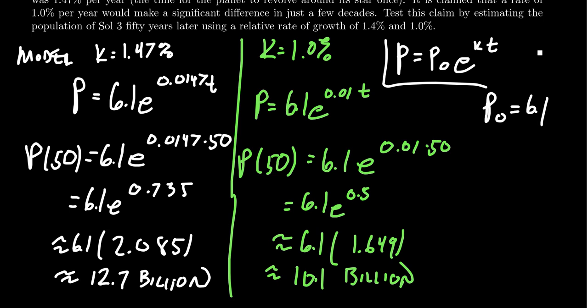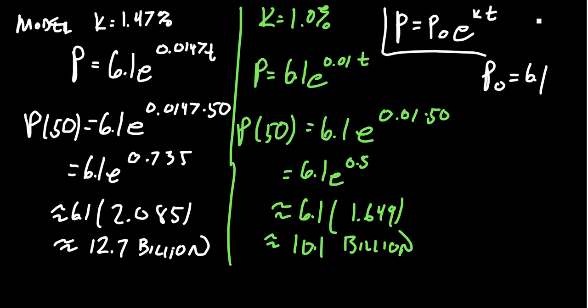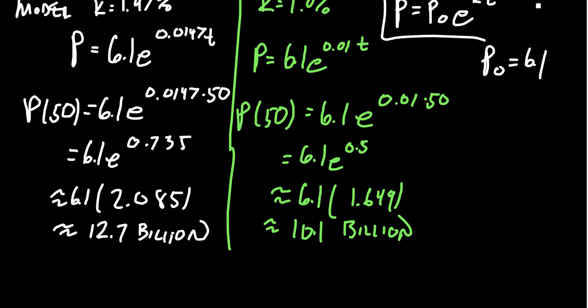With the current growth rate 50 years from now, you have 12.7 billion people on Sol 3. For the smaller growth rate of 1%, you'd have 10.1 billion. And so that is a difference of about 2, almost 3 billion right there. And so as such, it is fair to say that the growth rate, the decrease of the growth rate would be significant to the population.